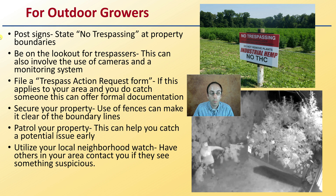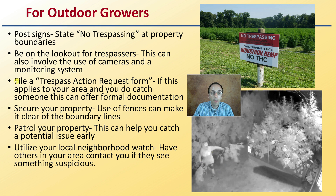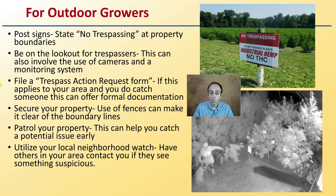For outdoor growers, it's suggested they may want to post signs stating 'No Trespassing' at property boundaries, and also inform people if they're growing industrial hemp with no THC to encourage people not to remove plants. Be on the lookout for trespassers — this can involve the use of cameras and monitoring systems, as we can see here. File a trespass action request form if this applies to your area, as it offers formal documentation if you do catch someone.